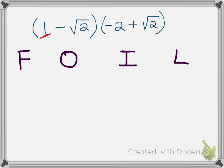We're going to look at the first term in that first set of parentheses, which is 1, and then the first term in the second set of parentheses, which is negative 2, and then we're going to multiply them. So 1 times negative 2 equals negative 2.